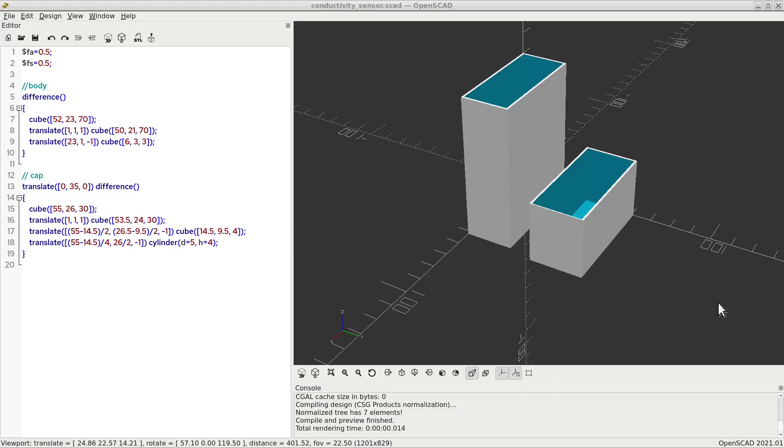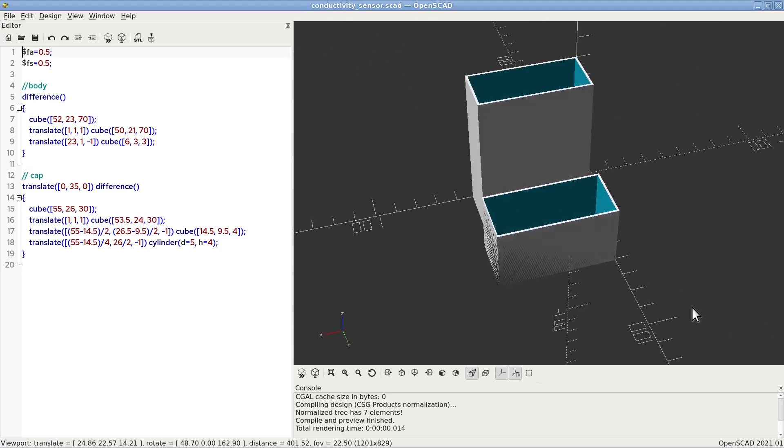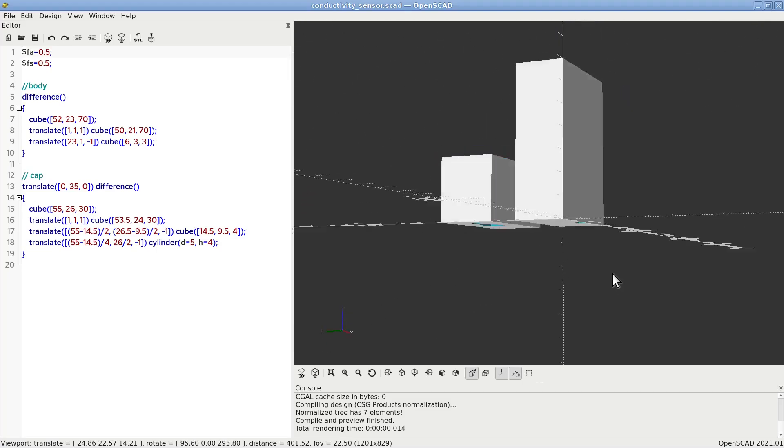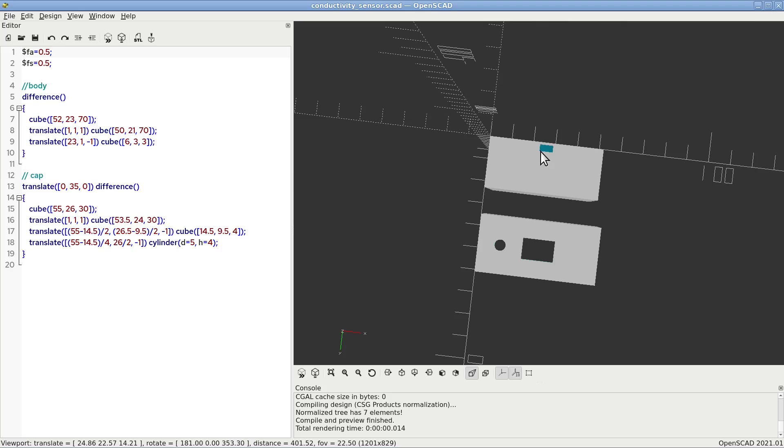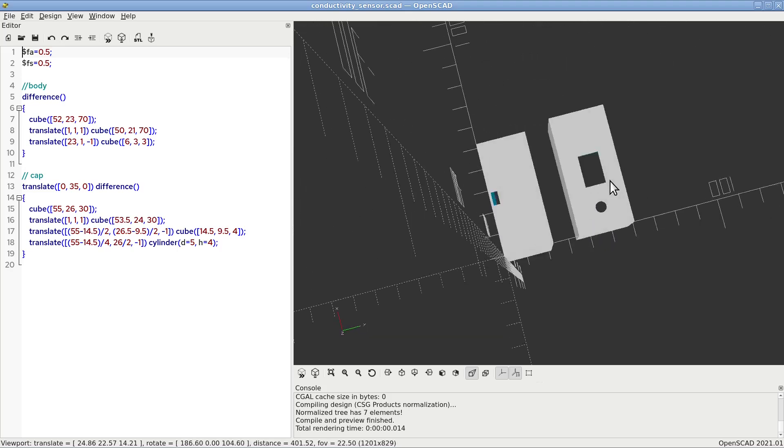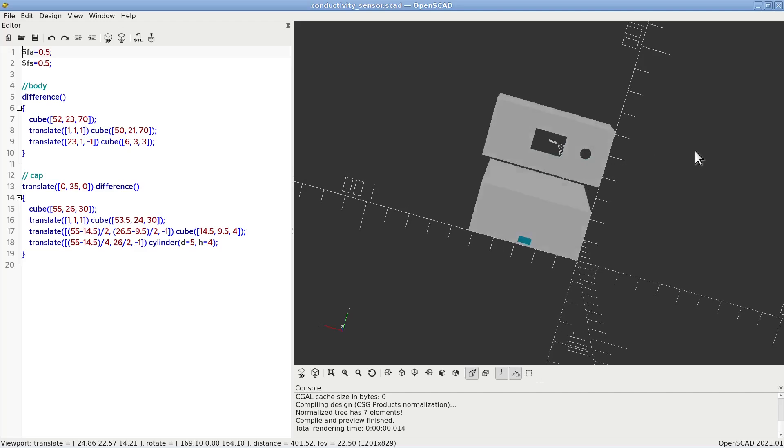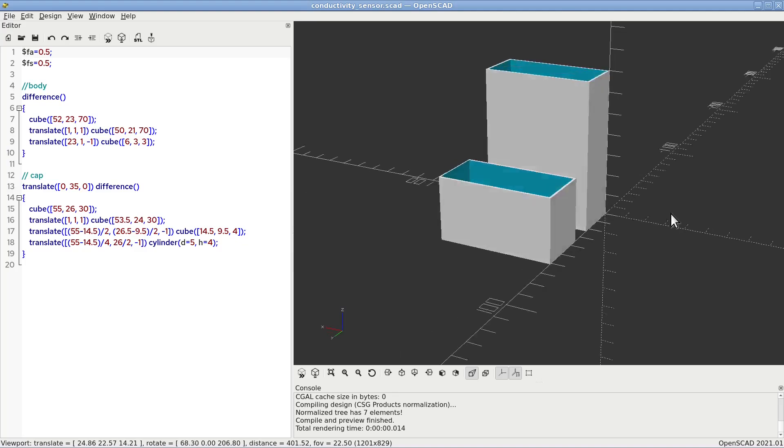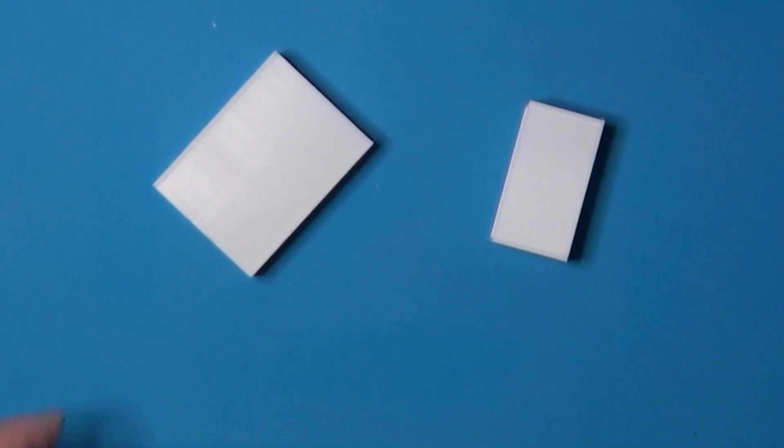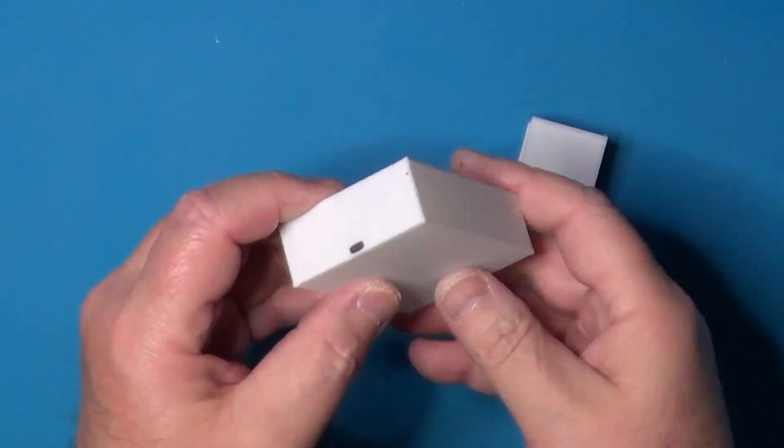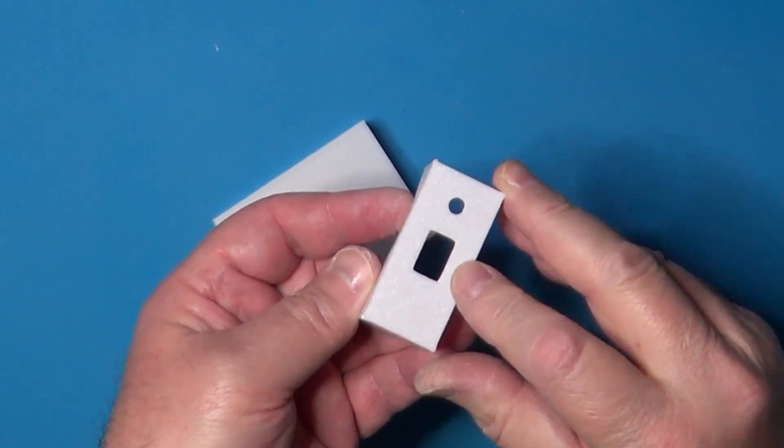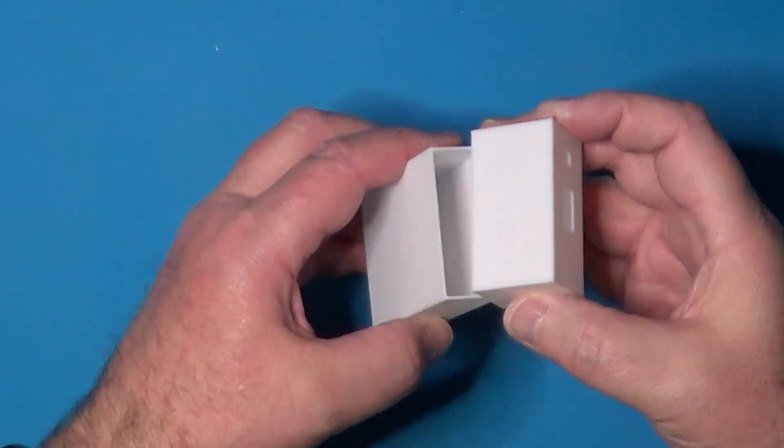For this simple device, I designed in OpenSCAD a small box to contain it. It has a small hole on one end to let through a couple of wires that make up the sensor. The cap instead has two holes, one for the LED and one for a switch to turn on and off the device. And here is the 3D printed box with its cap. I had to make five of these boxes to accommodate my wife's needs.